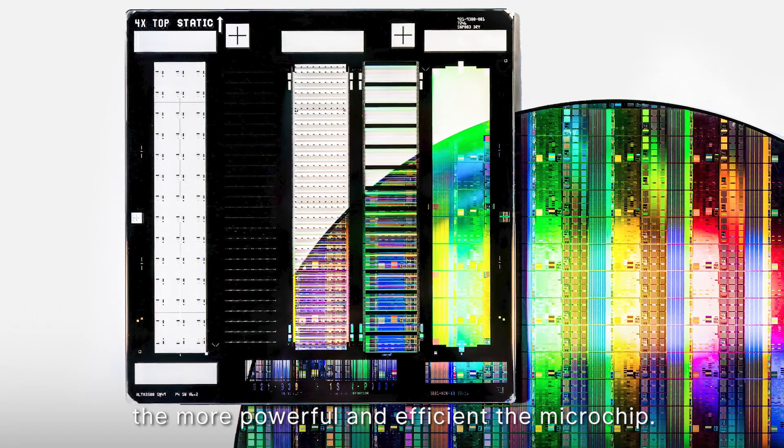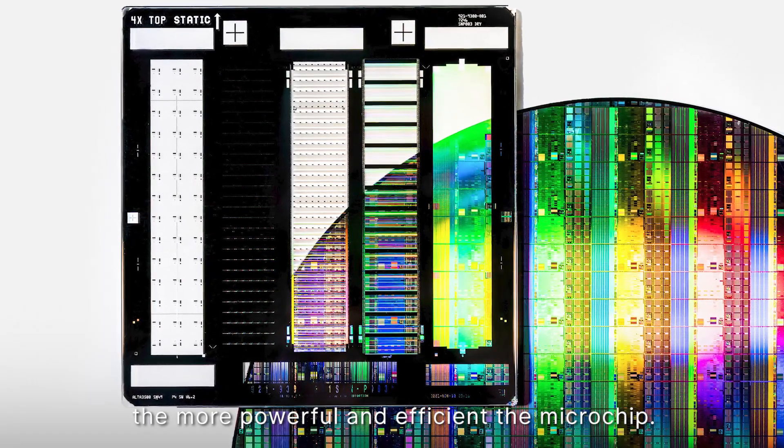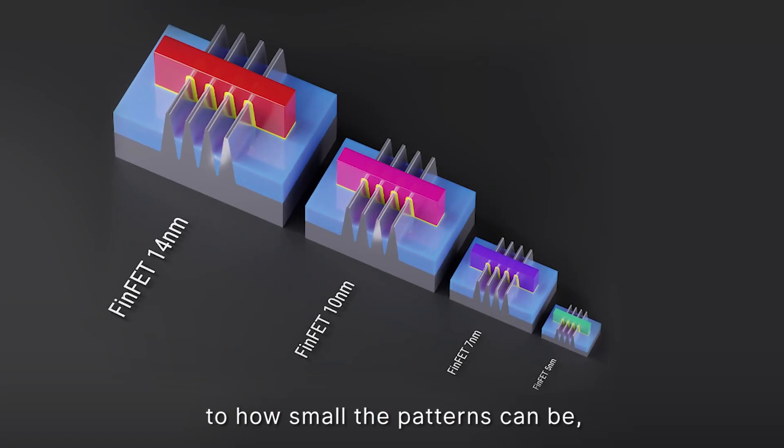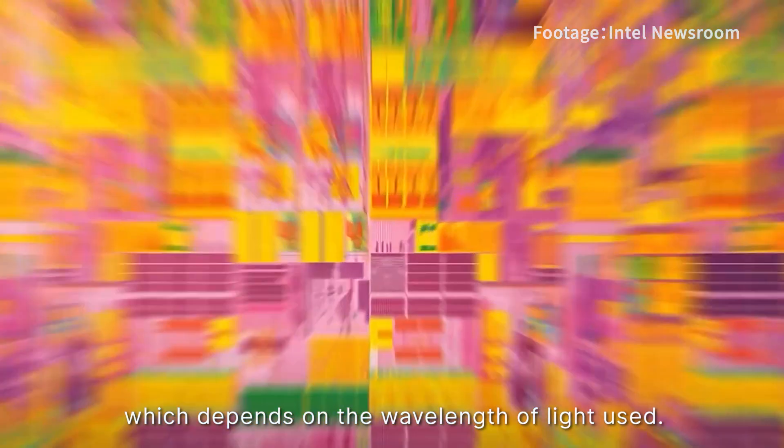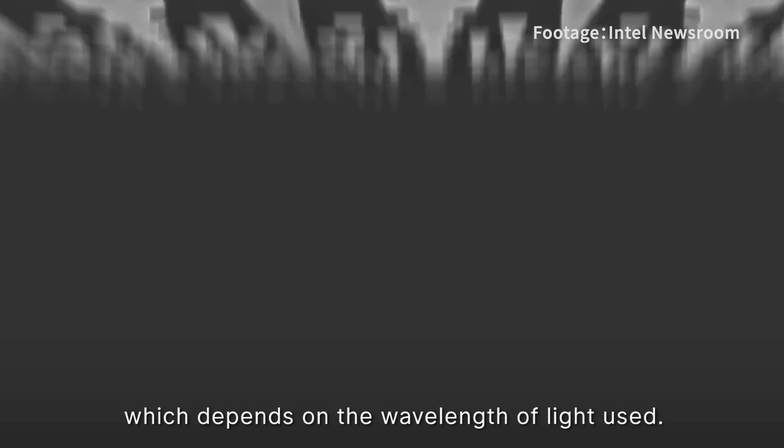The smaller the pattern, the more powerful and efficient the microchip. However, there is a limit to how small the patterns can be, which depends on the wavelength of light used. Shorter wavelengths allow for smaller patterns.